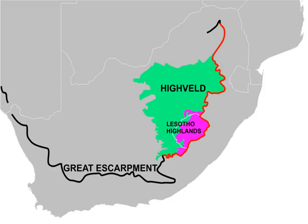The Hivelde constitutes almost the whole of the Free State and Gauding provinces, and portions of the surrounding areas: the western rim of Lesotho, and portions of the eastern Cape, northern Cape, north-west, Limpopo, and Impamalanga provinces of South Africa.